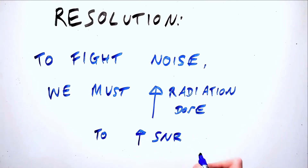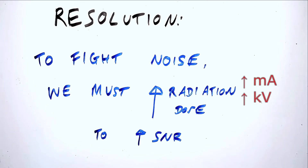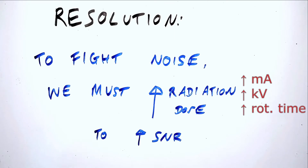Increasing the radiation dose to reduce the amount of noise could be done by increasing the tube current (mA) or the tube voltage (kV), by lengthening the rotation time, or similarly by decreasing the pitch. All of these would increase our radiation dose, which in turn would mitigate some of the noise created by, for example, decreasing the slice thickness.